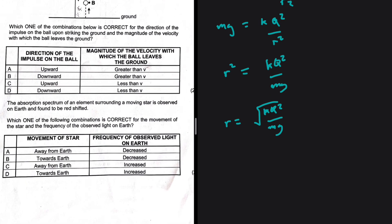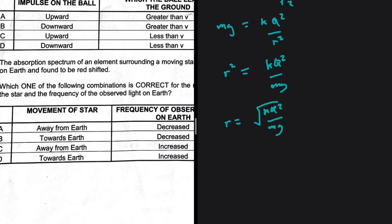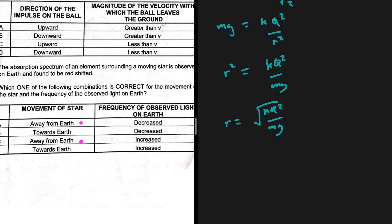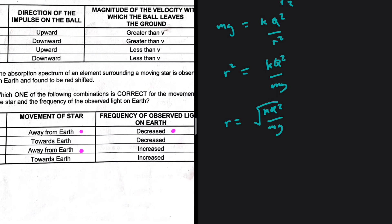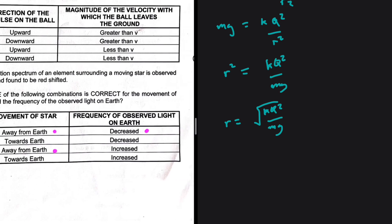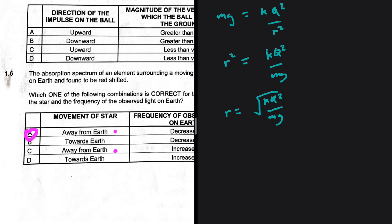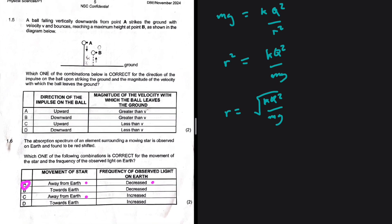Question 1.6: the absorption spectrum of an element surrounding a moving star is observed on Earth and found to be red-shifted. A red shift tells us the star is moving away. The frequency of the observed light on Earth should have decreased relative to the frequency emitted at the star. The answer is option A.